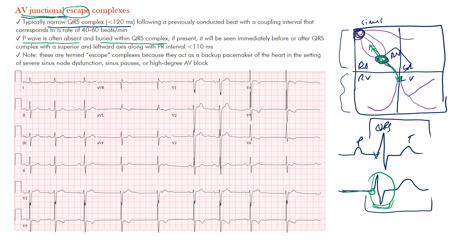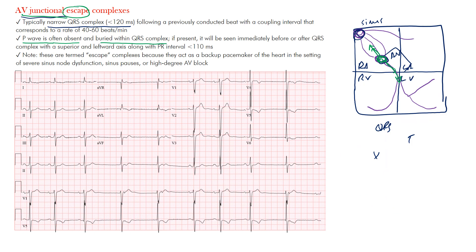Just as the heart has a primary conduction system, it also has backup systems. These escape complexes act as the backup — they allow the heart to continue beating and maintain normal blood output to the body when the primary pacemaker fails.